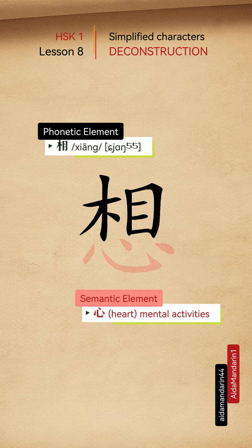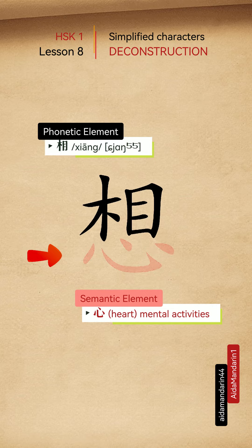The Chinese character 想 is a semantic phonetic compound character composed of two elements. 心 is the semantic element, indicating its association with mental activities. The ancient Chinese believed that the heart was the organ of thought, and heart signifies to consider or ponder something in one's mind.